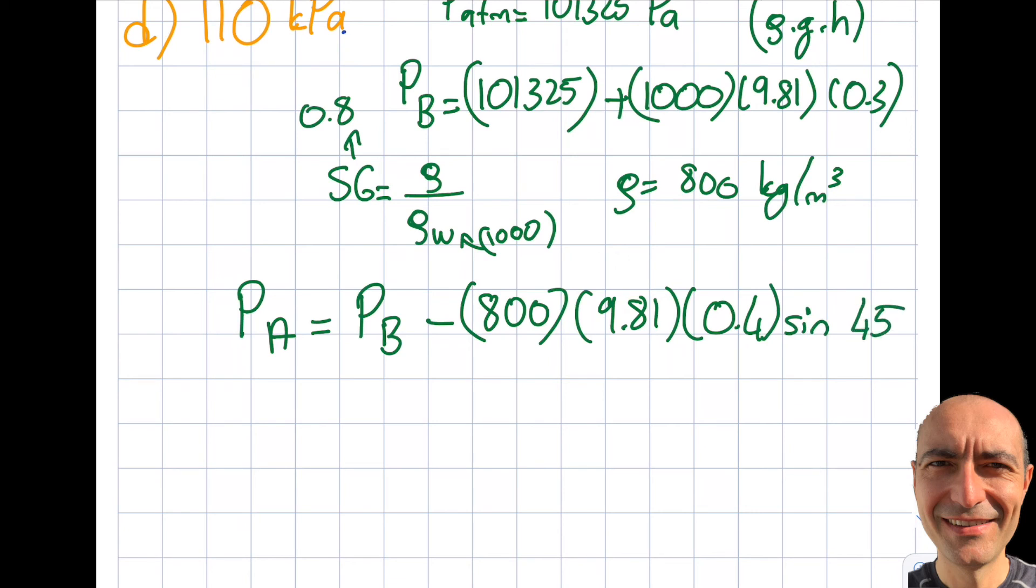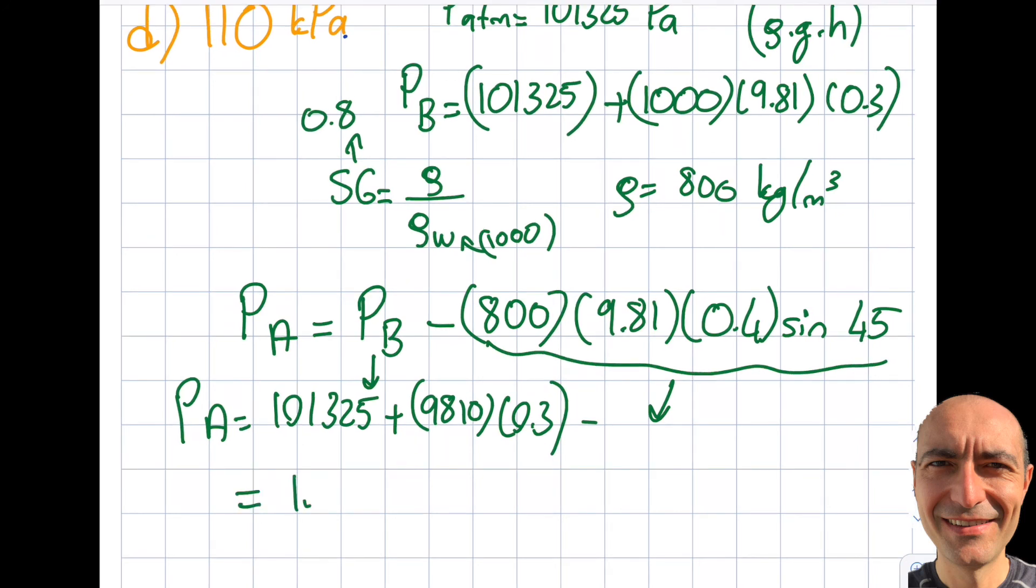And so then basically as you can see, you get your P_A to be 101,325 plus 9,810 times 0.3, that is my P_B, minus the whole thing over here. Basically what I do is I go out and punch it into my calculator and I do see that I get myself right around 101,600.